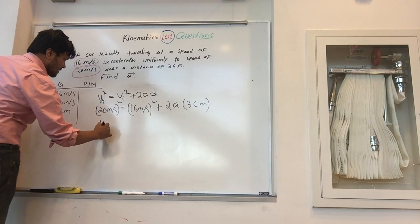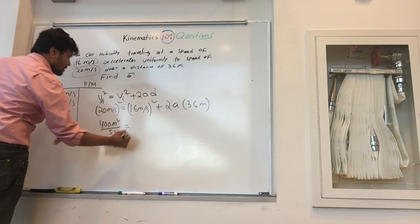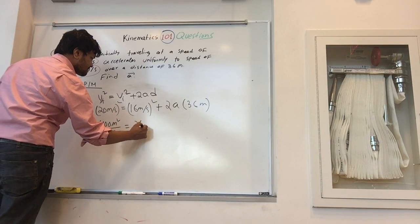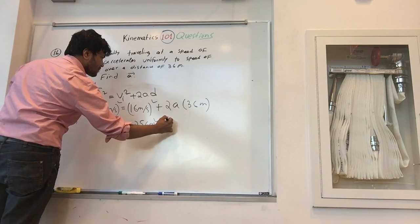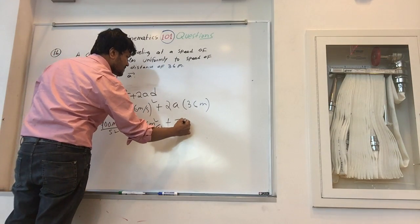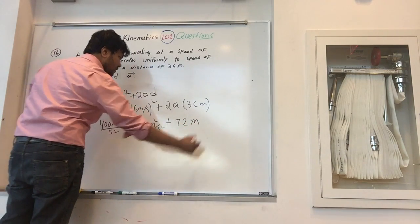So 400 meters squared per second squared equals 256 meters squared per second squared plus 72 meters times a, and we're going to write the acceleration.